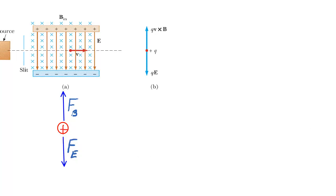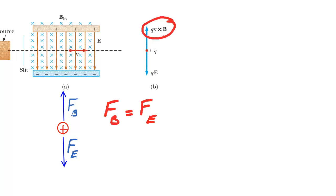The goal is for the charge to move in a straight line, undeflected. So there cannot be a net force acting on the charge — the magnetic force has to equal the electric force. We know the magnetic force is the simple equation Q times V times B, where Q is the value of the charge, V is the velocity entering the plates, and B is the value of the external magnetic field. The electric force is simply Q times the value of the electric field E.